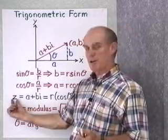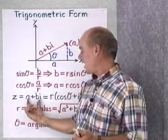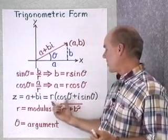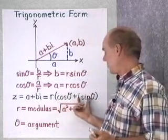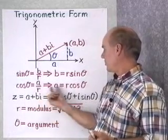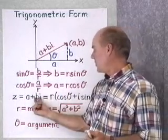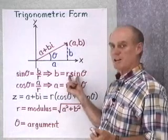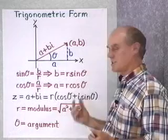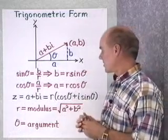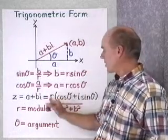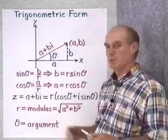We can take z, our complex number, which is a + bi, and write it as r·cosθ + r times the quantity (cosθ + i·sinθ). Because a equals r·cosθ and b·i equals r·sinθ·i, we can factor r outside and get cosθ + i·sinθ inside the parentheses. This form is called trigonometric form for the complex number a + bi.